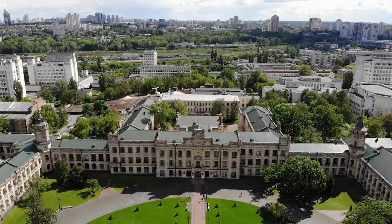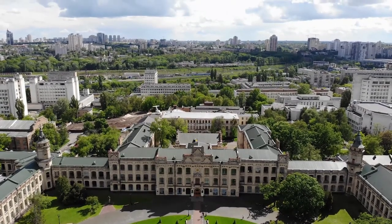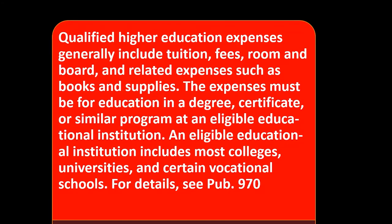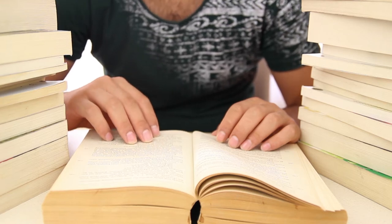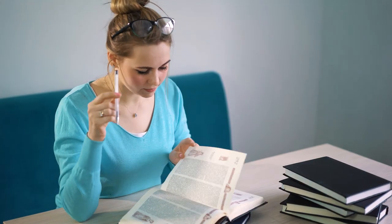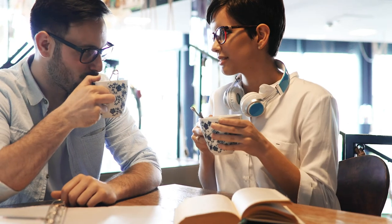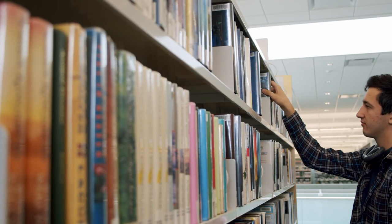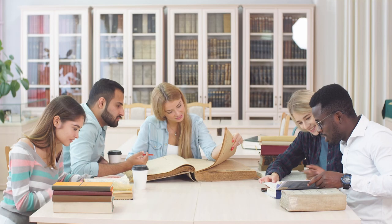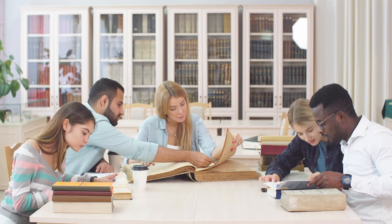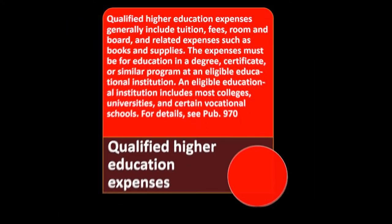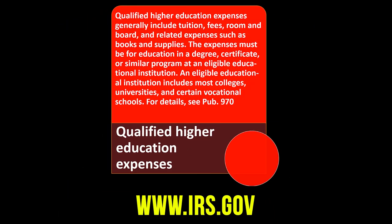Qualified higher education expenses generally include tuition, fees, room and board, and related expenses such as books and supplies — so there's a bit more room than just tuition alone. The expenses must be for education in a degree, certificate, or similar program at an eligible educational institution, which includes most colleges, universities, and certain vocational schools. See Publication 970 on irs.gov for further details.